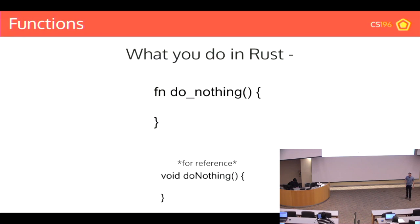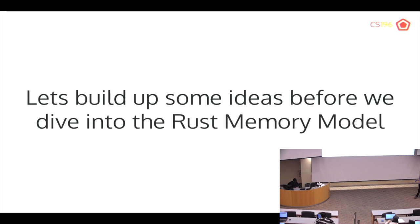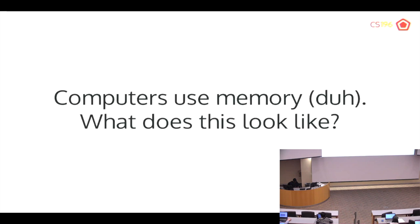So those are functions. Let's dive into the main content of today: the Rust memory model. There are a lot of ideas that feed into this. We'll start with memory. It's very easy to forget that computers use memory, because in higher level languages like Java or Python, we don't have to deal with memory management at all. But in systems programming languages such as Rust, C++, and C, you have to manage memory on your own.